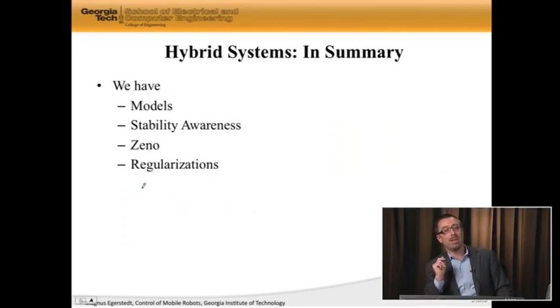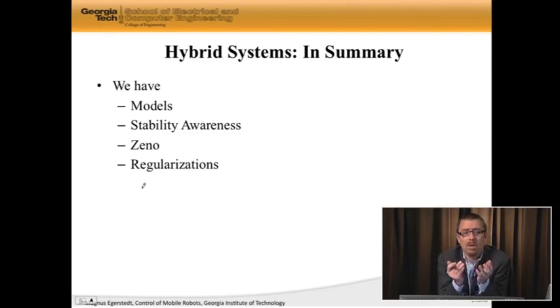Having said that, this actually brings me to the summary of this entire module on hybrid systems. So what do we have? We have models. We have very rich models, which are these hybrid automata models. We have something that we call stability awareness here. Just, we're aware of the fact that just because the sub modules or the sub modes are stable themselves doesn't mean that the hybrid system is stable, and we need to be aware of it, test for it.